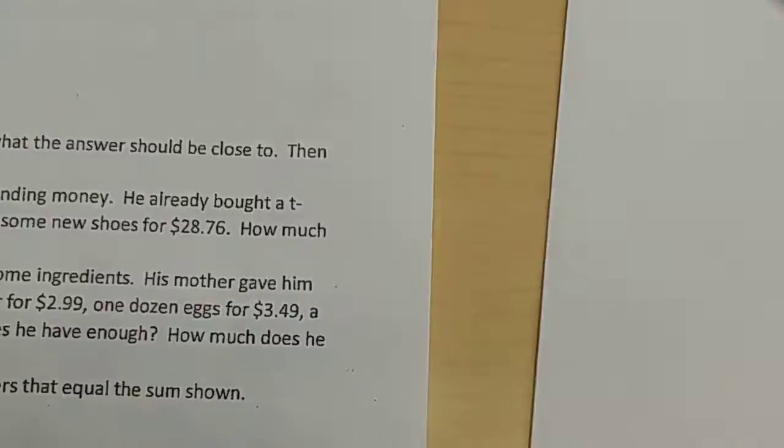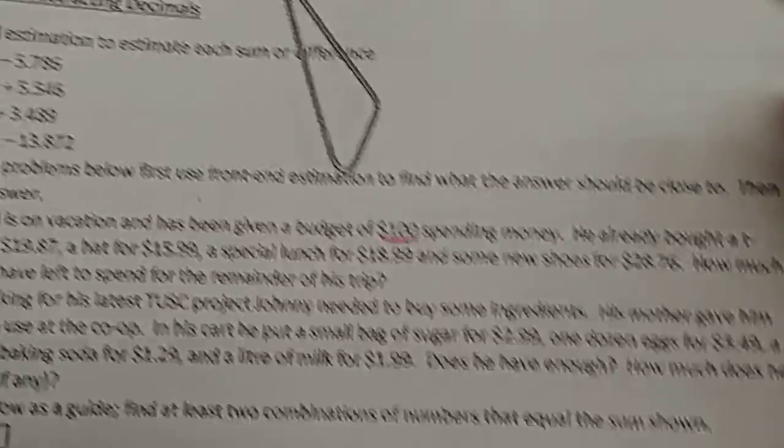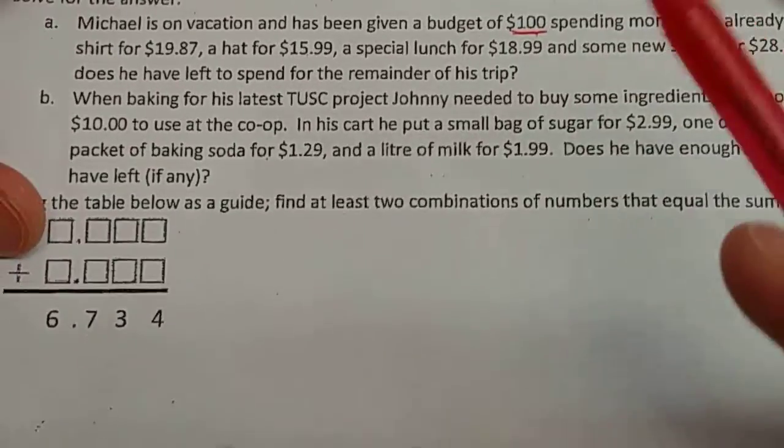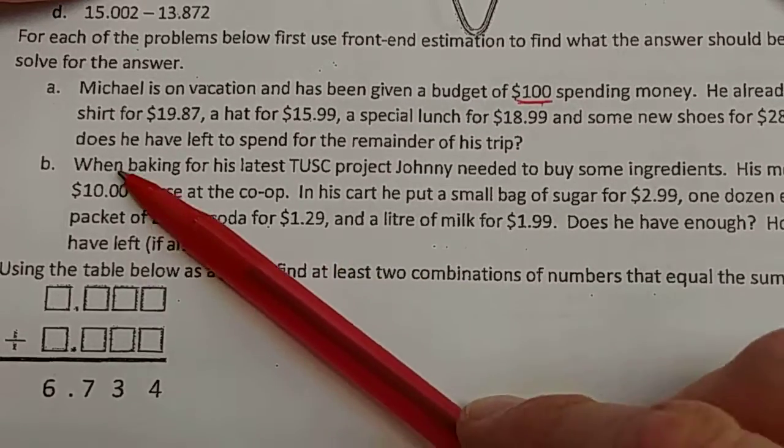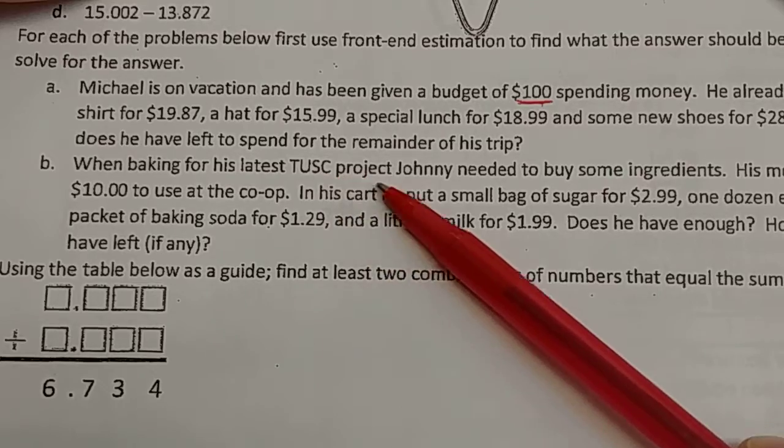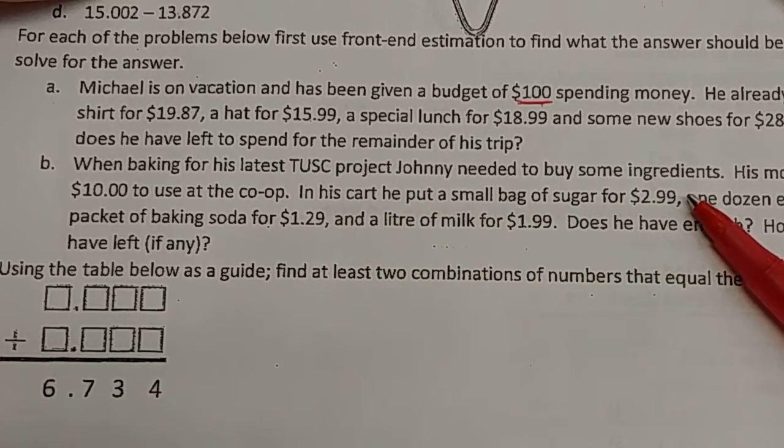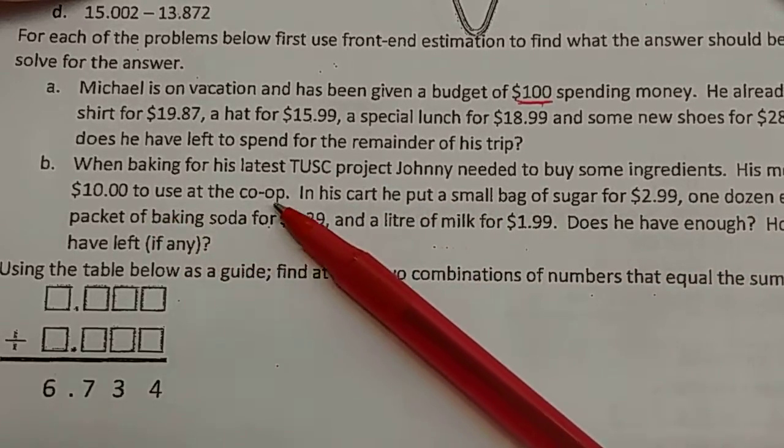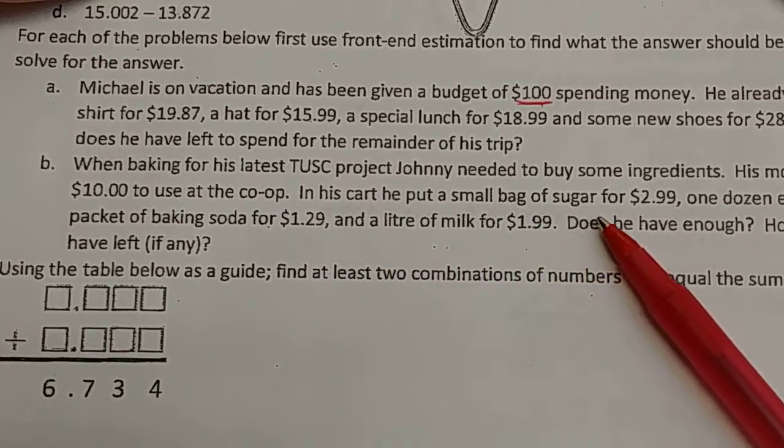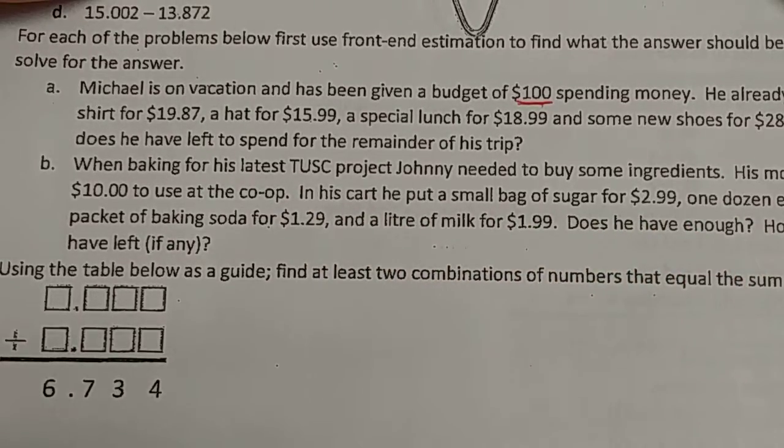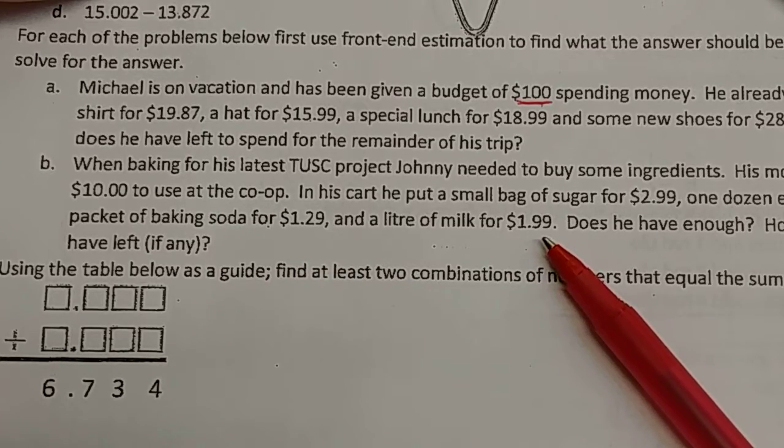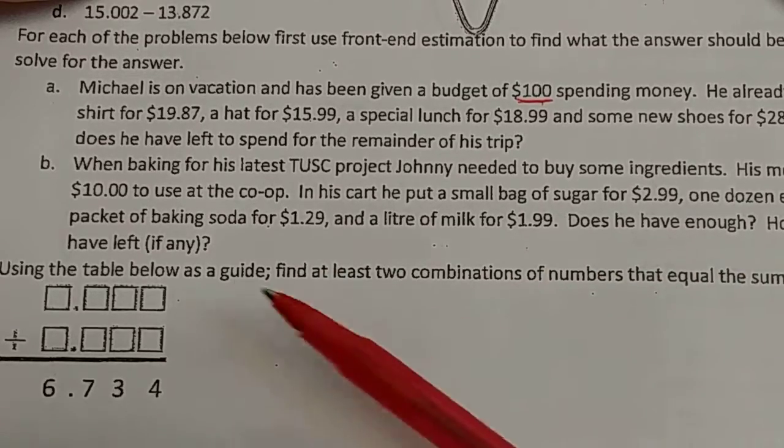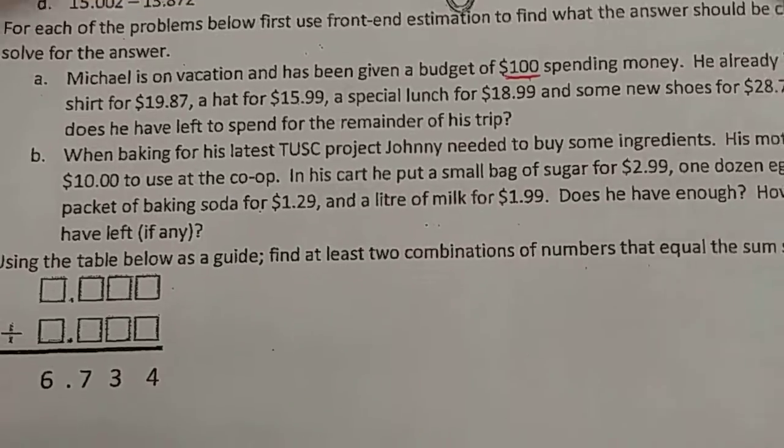Okay. Let's do number B. Now it says front-end estimation first. So let's read it. And then we'll try to figure out what the front-end estimation should look like. When baking for his latest Tusk project, Johnny needed to buy some ingredients. His mom gave him $10 to use a co-op. In his cart, he put a small bag of sugar for this much, a dozen eggs for that much, packet of baking soda for this much, and a liter of milk for this much. Does he have enough? How much does he have left, if any?